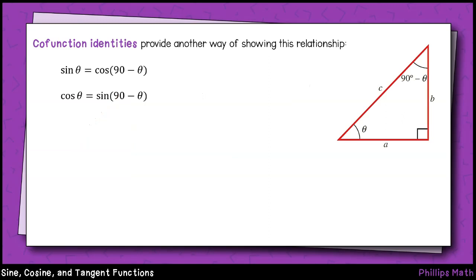This identity is simply another way of defining these two functions. Since a right triangle has 90 degrees of measure shared between two acute angles, you can use these definitions as another way of finding all the sine and cosine values that are equal to one another.